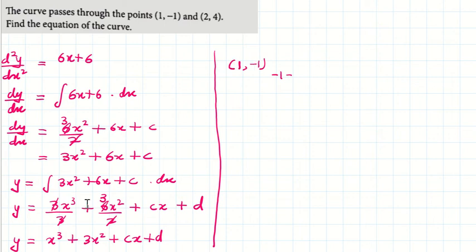I'll substitute (1, -1). So -1 = 1 + 3(1) + c + d. This is 4, so c + d = -5. That's my equation 1.